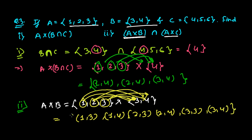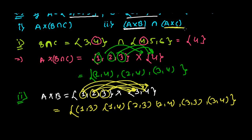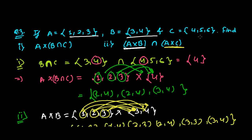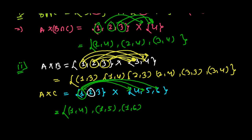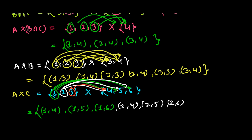Now let's find A cross C. The elements of A are 1, 2, 3 and the elements of C are 4, 5, 6. Pairing them: 1 pairs with 4 giving (1,4); 1 pairs with 5 giving (1,5); 1 pairs with 6 giving (1,6). Then 2 pairs with 4 giving (2,4); 2 pairs with 5 giving (2,5); 2 pairs with 6 giving (2,6). Then 3 pairs with 4 giving (3,4); 3 pairs with 5 giving (3,5); 3 pairs with 6 giving (3,6).